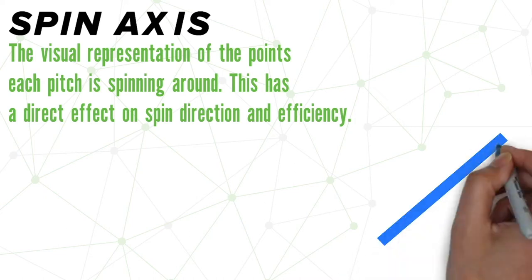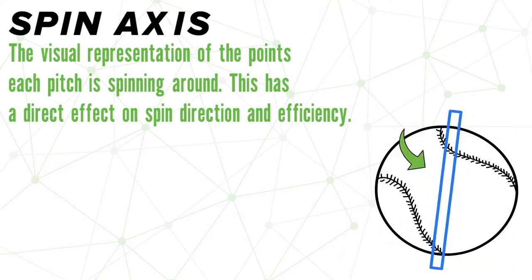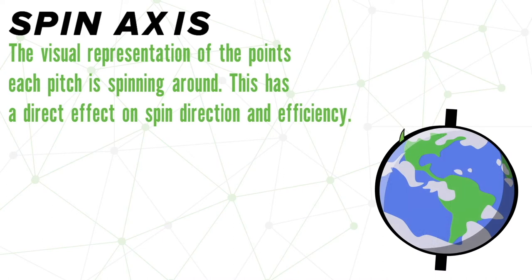When you picture spin axis, think of it as a pole going straight through the middle of the baseball. Each pitch will spin around this axis the same way you can picture the earth revolving around the poles.